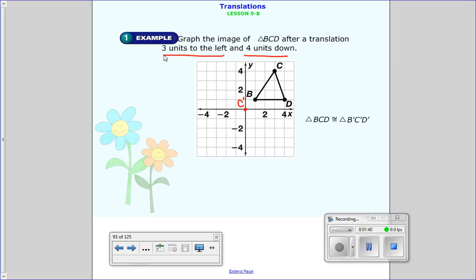Then I do it to B. 3 units to the left, 1, 2, 3, and 4 down, 1, 2, 3, 4. That is B transformed. And finally I go to D, 3 units to the left, 4 units down, and that is D transformed. I can connect those dots, and there we go, I just made the image of triangle BCD.